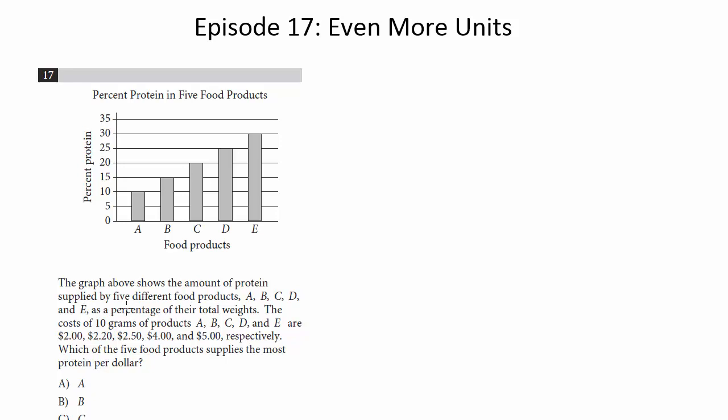The graph above shows the amount of protein supplied by five different food products, A, B, C, D, and E, as a percentage of their total weights. The cost of 10 grams of products A, B, C, D, and E are those prices, respectively. Which of the five food products supplies the most protein per dollar?